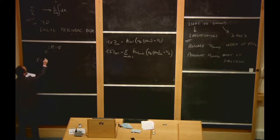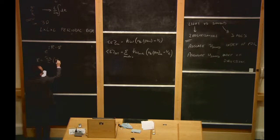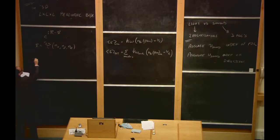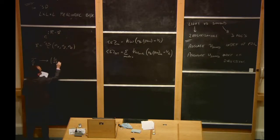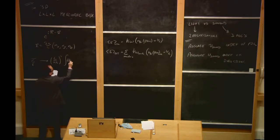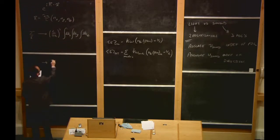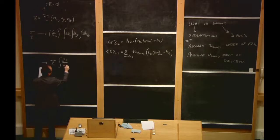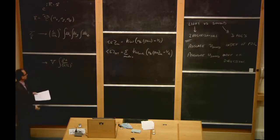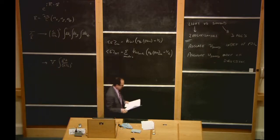In 3D, k⃗ = (2π/L)(n_x, n_y, n_z). So if we have a sum over k vectors, we can replace it with (L/2π)³ times the integral dk_x dk_y dk_z, or equivalently Volume × ∫d³k/(2π)³. We'll see this factor — Volume × ∫d³k/(2π)³ — probably 100 times this year.